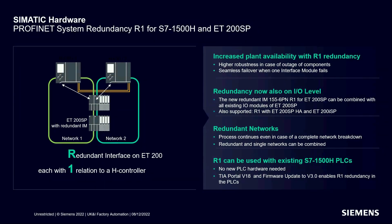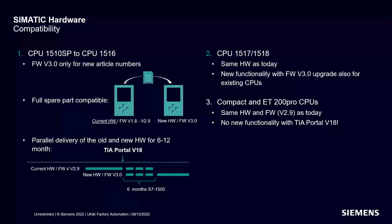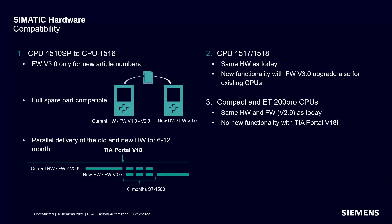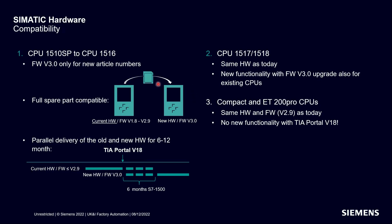Compatibility is very important: the new processors are what we class as spare part compatible. If you have an S7-1500 version 1.8 installed since 2012 and it gets damaged, you can take the memory card out of the old unit, plug it straight into a new unit, and it will run in compatibility mode — no upgrades to application code required. The new CPU will run faster, but no code changes are needed, and this applies across all 1500 Pro CPUs regardless of firmware version.